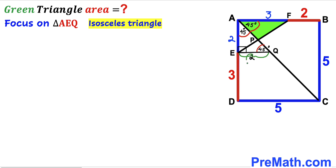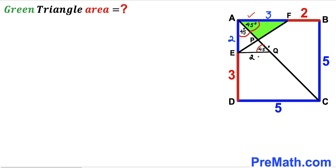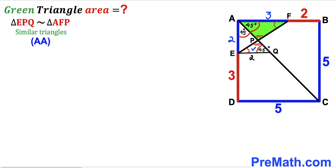Since lines EQ and AF are parallel to each other, this angle equals this angle — they are alternate angles and are congruent. Likewise, this angle is congruent to this angle since they are vertical angles. Therefore we conclude that tiny triangle EPQ and green shaded triangle AFP are similar triangles, according to the angle-angle similarity theorem.